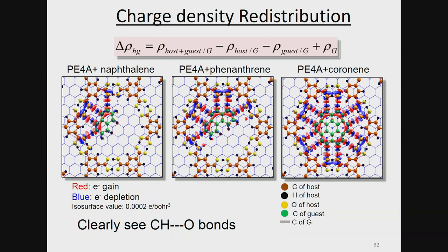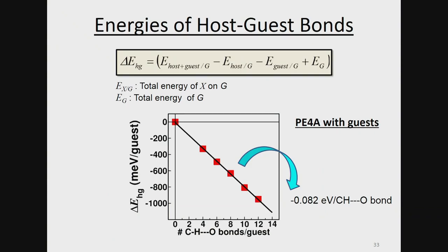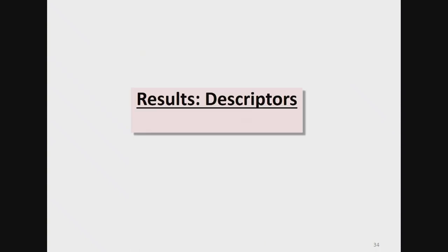We can also look at charge density maps — maps of how the charge density is redistributed upon introducing the guest into the cavities for one of the molecules, PE4A. A red blob means accumulation of electron density, a blue blob means depletion, and every line of alternating red and blue represents a hydrogen bond. You can clearly see the hydrogen bonds formed between the host and the guest. Depending on which guest is introduced, I either have four bonds, six bonds, twelve bonds, etc. I get a nice linear graph and can calculate the energies of those bonds: 0.082 eV per bond.